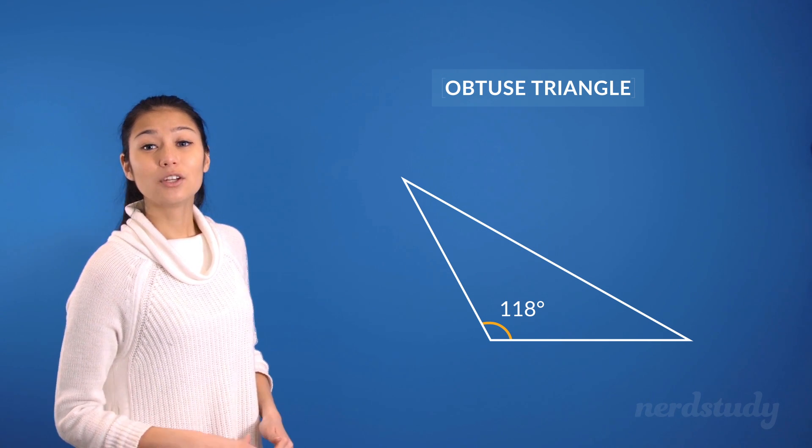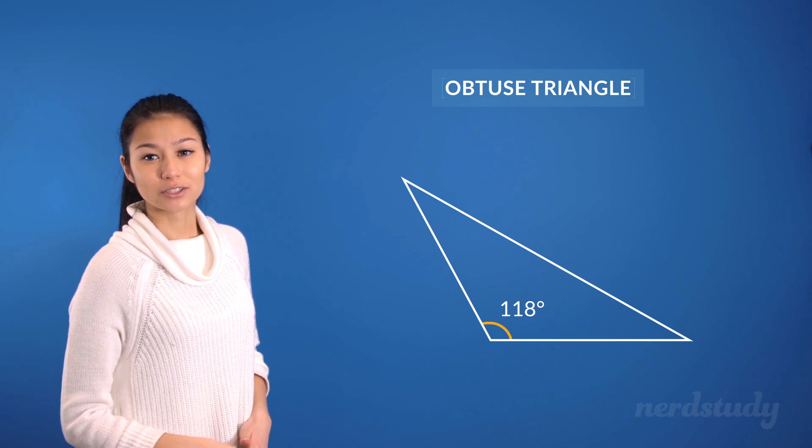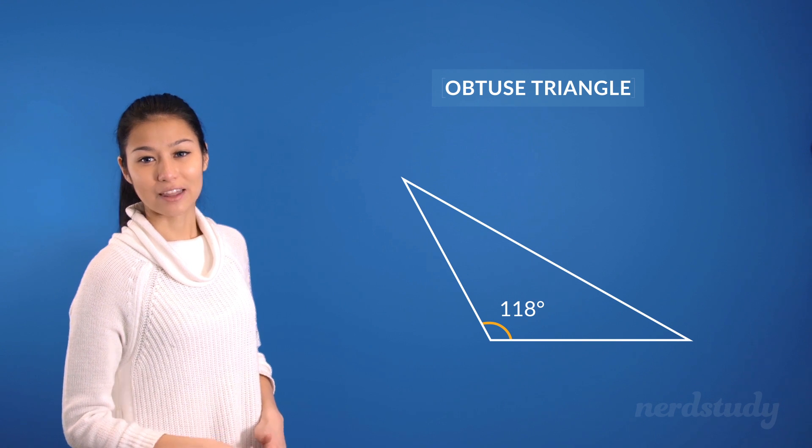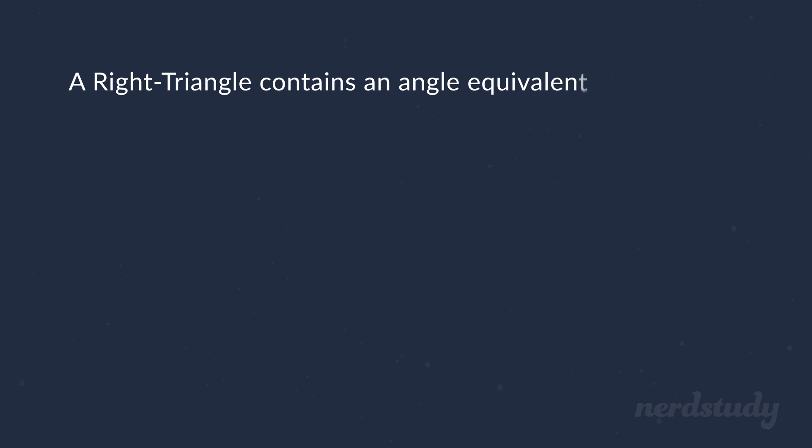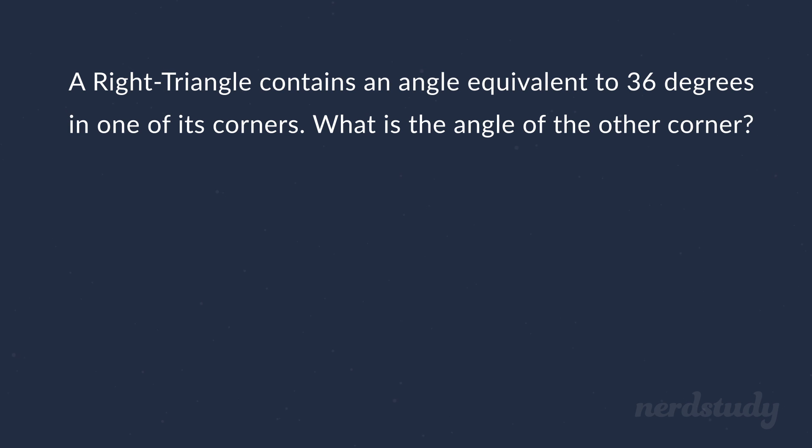With the knowledge we just gained about triangles, let's try another question together. A right triangle contains an angle equivalent to 36 degrees in one of its corners. What is the angle of the other corner?